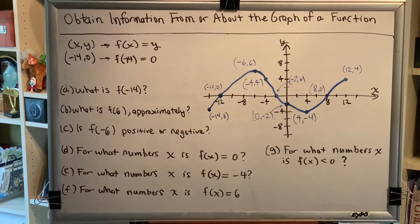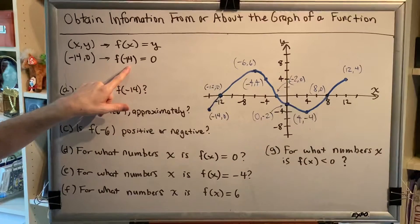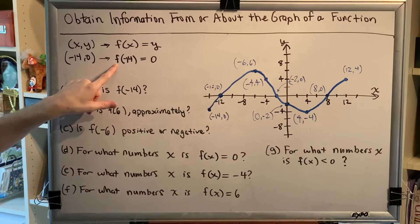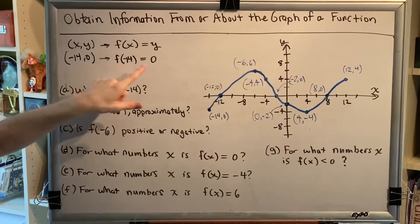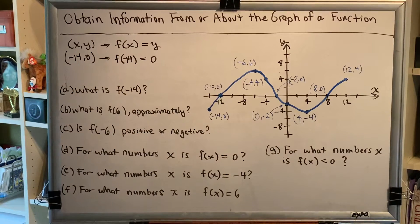You can think of it this way: when the number negative 14 is put into a machine named f, what comes out is 0. With this in mind, let's go ahead and solve this problem.